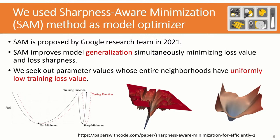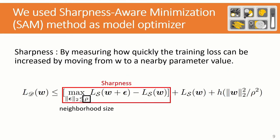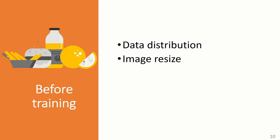We also use the Sharpness-Aware Minimization method as our model's optimizer. SAM is proposed by the Google research team in 2021. SAM improves model generalization by simultaneously minimizing loss value and loss sharpness. We seek out parameter values whose entire neighborhoods have uniformly low training loss value. The sharpness is measured by how quickly the training loss can be increased by moving from a weight to a nearby parameter. Before starting to train the model, we pre-processed the food images based on the data distribution.